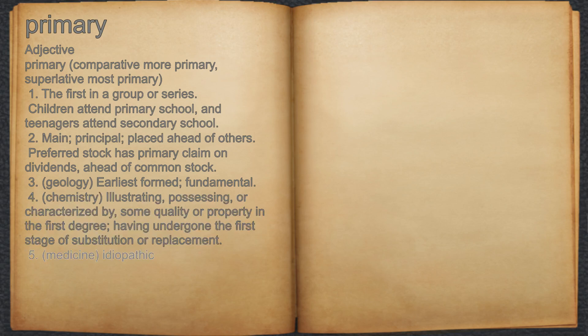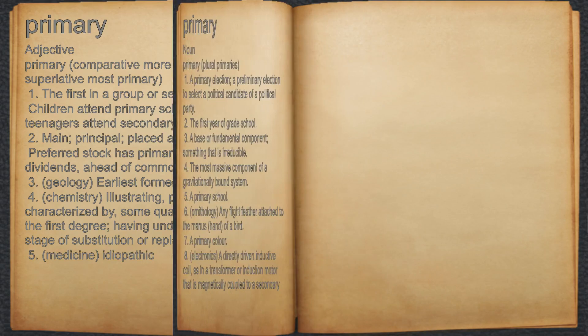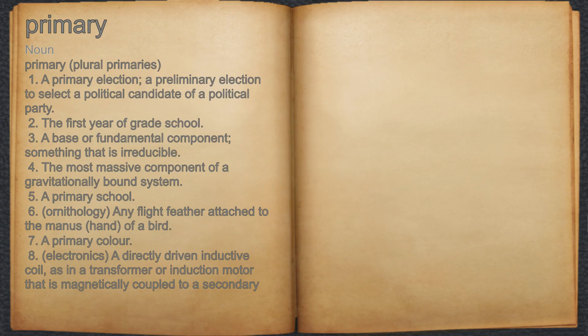5. Medicine: idiopathic. Primary. Noun. 1. A primary election: a preliminary election to select a political candidate of a political party.